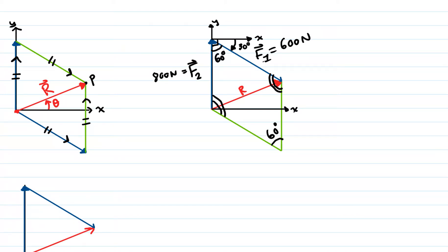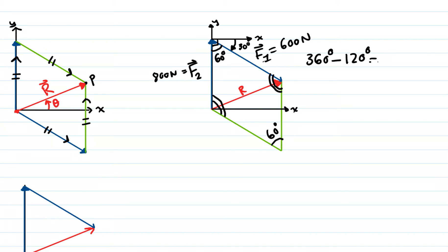We can solve for R since we have two sides and the angle between them. We can use the cosine law to find the resultant. But before we jump to that, let's see if we can find other angles in this parallelogram. One geometric property of a parallelogram is that the interior angles sum to 360 degrees. 360 minus 60 plus 60, which is 120, gives us 240 degrees.